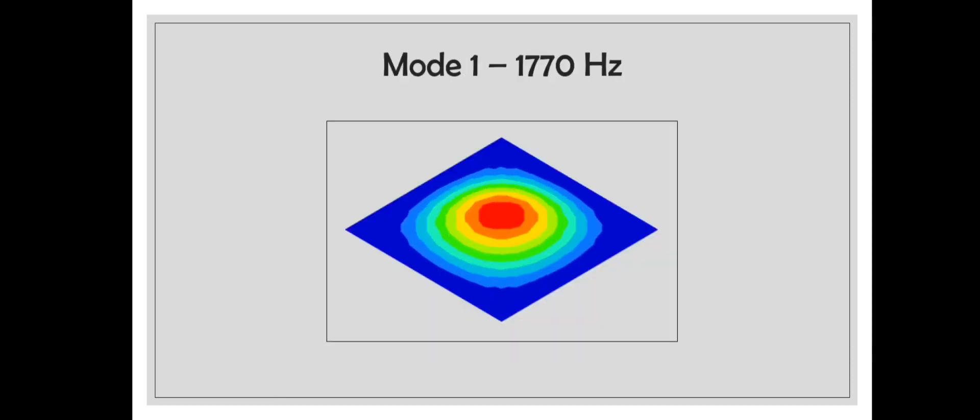This is the first mode, 1770 hertz. One thing we can observe in all the mode shapes is that the edges or the corners have no motion at all—they're just static. That is because we apply the constraint. We have constrained those nodes, restricting their motions in all six degrees of freedom. That's going to be one common thing in all the eight mode shapes that you will observe. This is the first mode shape, acting like this.